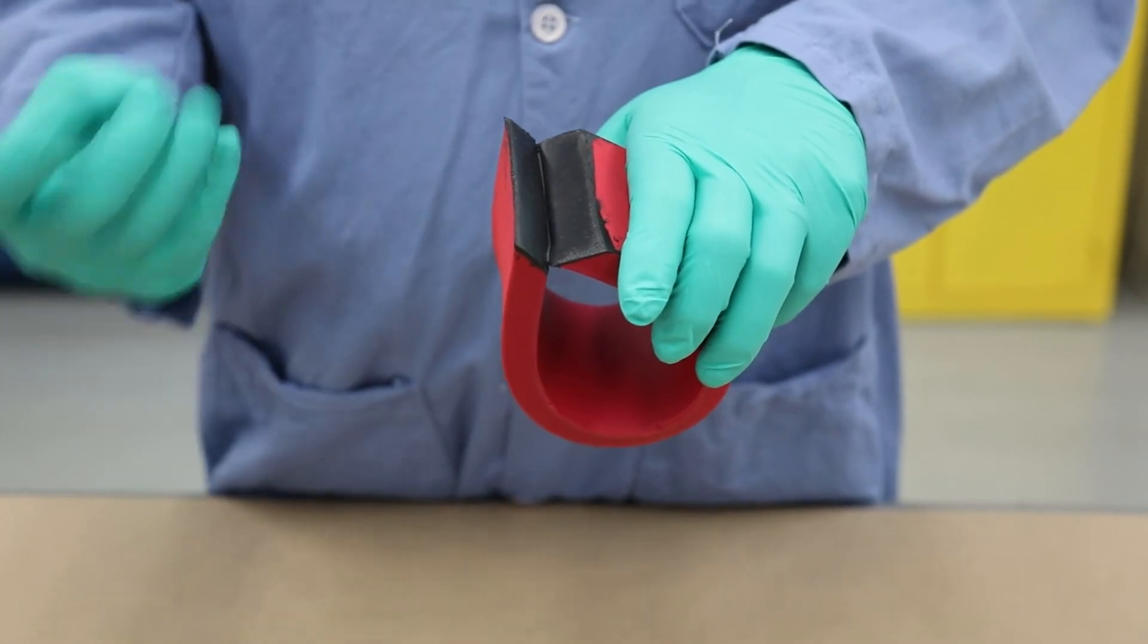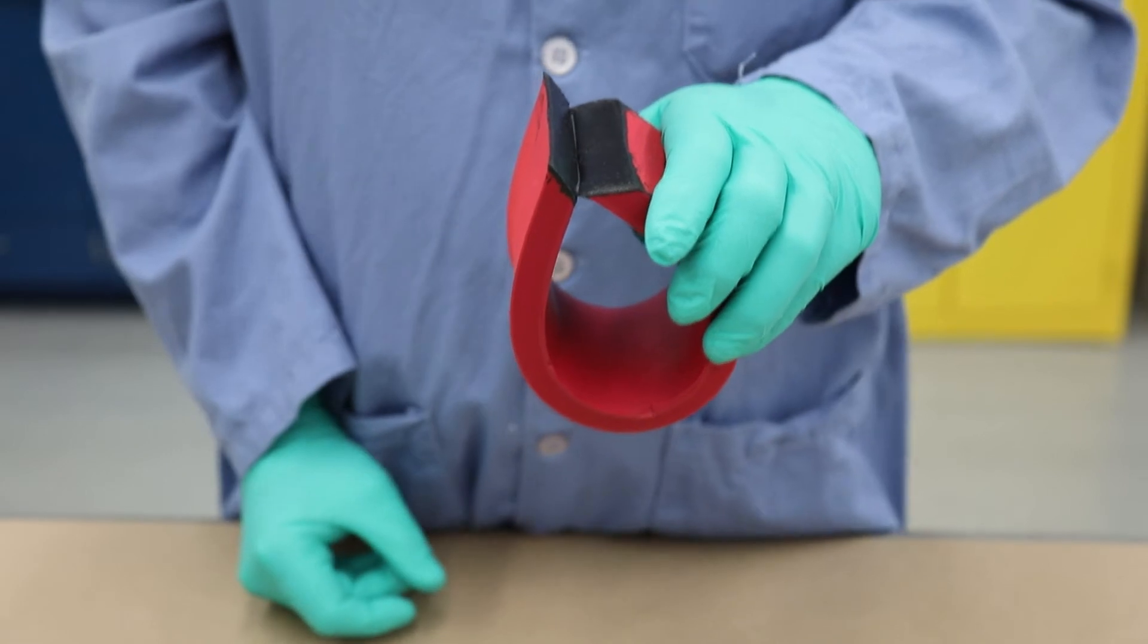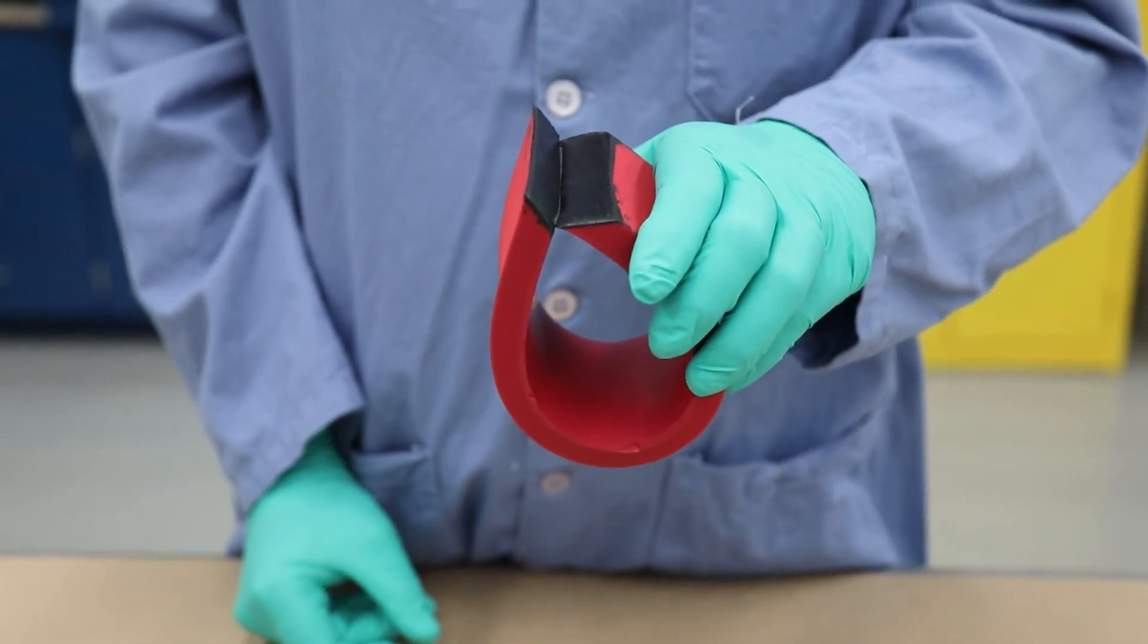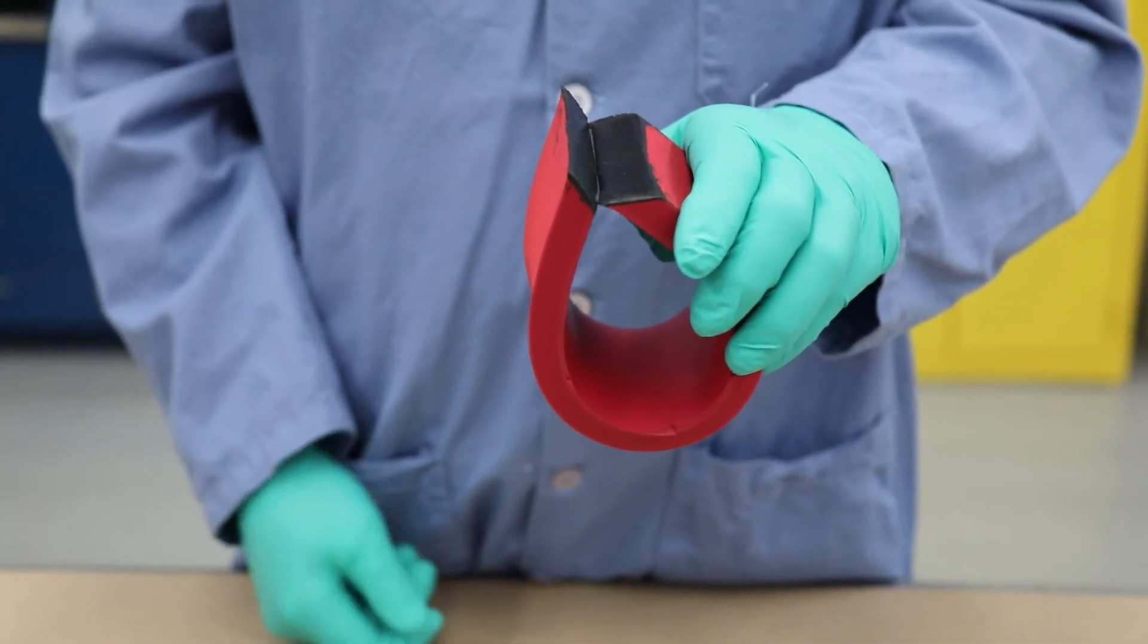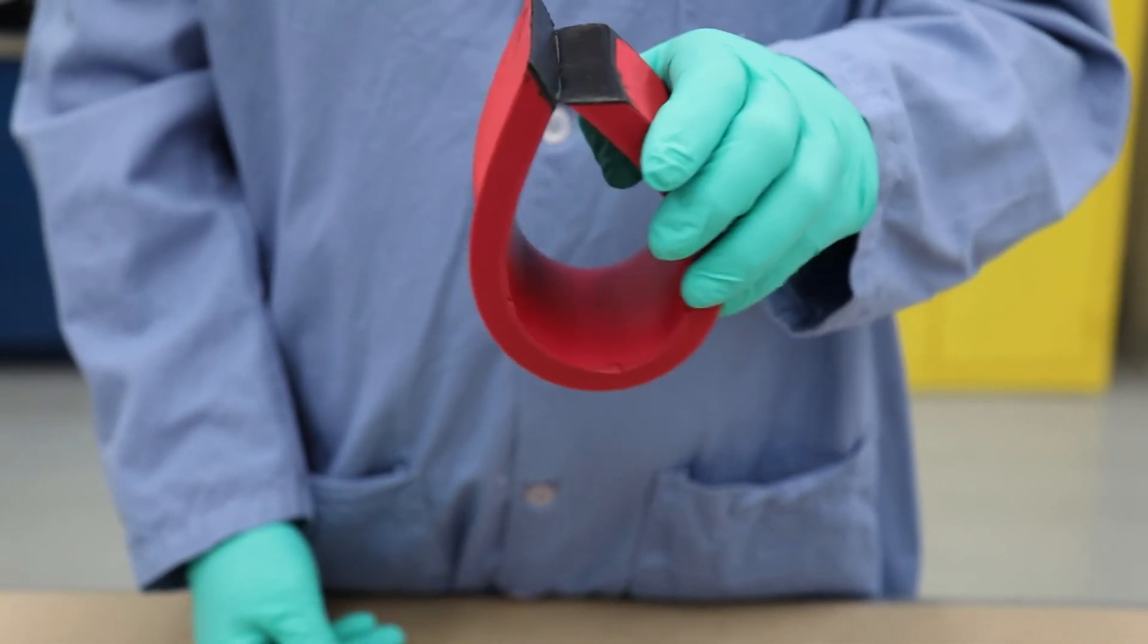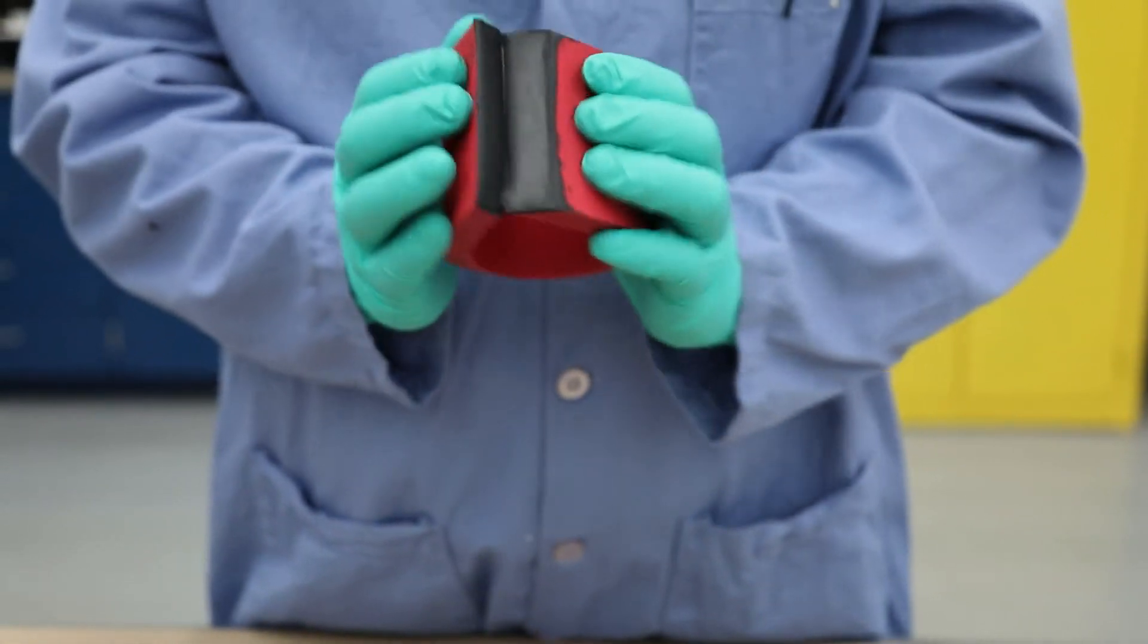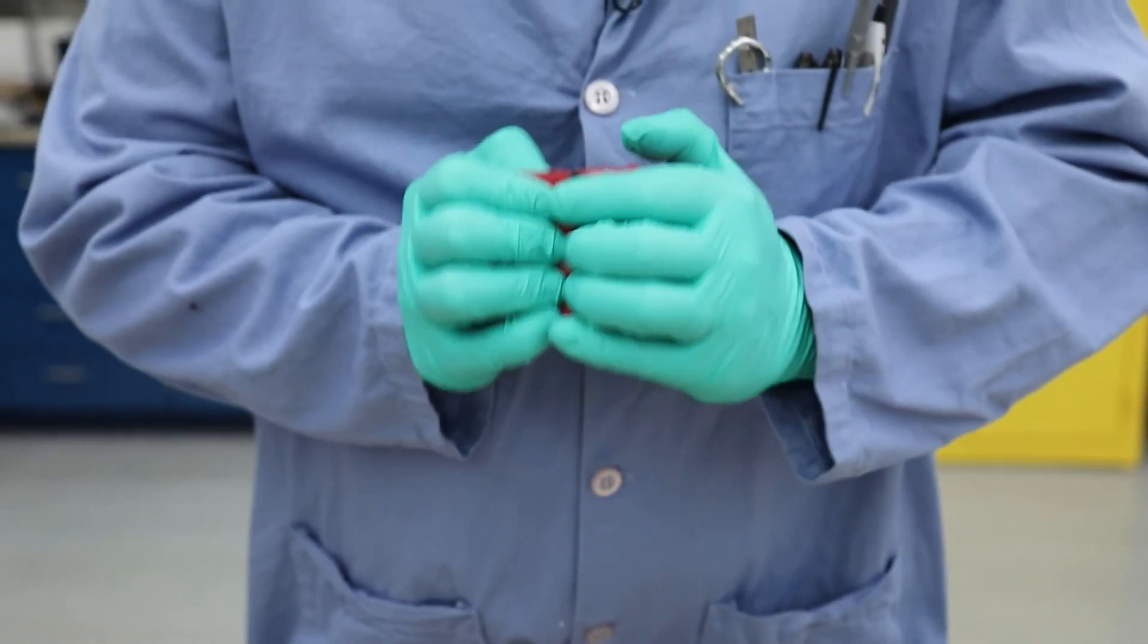If the material was to have slipped apart and not stuck together, that means you allowed it to dry for too long and a re-tack would be required where you would use xylene on a rag, do a quick wipe, and allow 10 minutes. But now that it's holding, we're going to finish the seam.